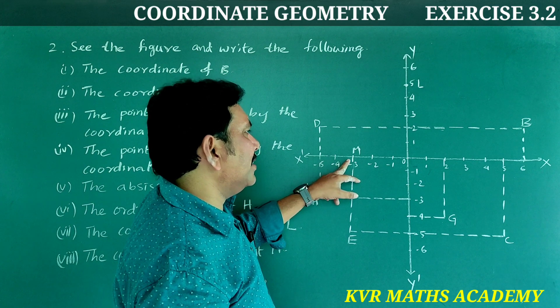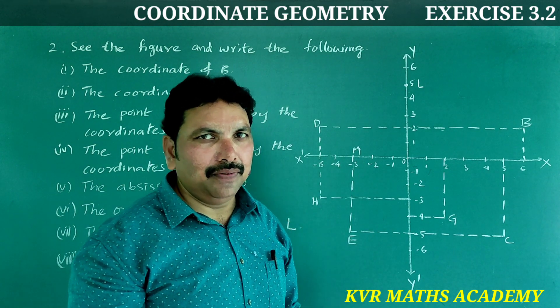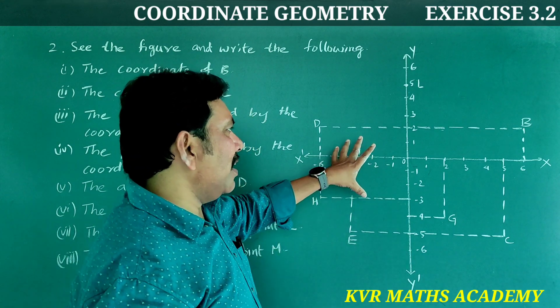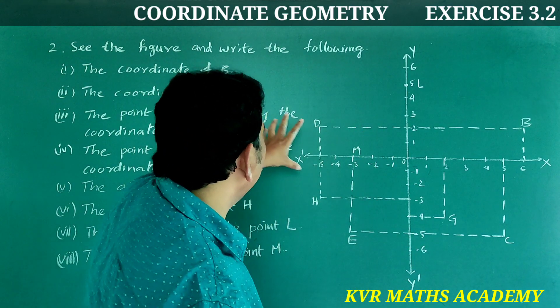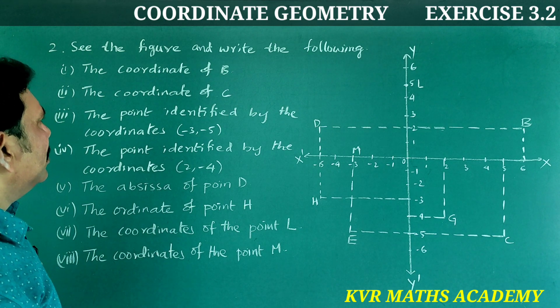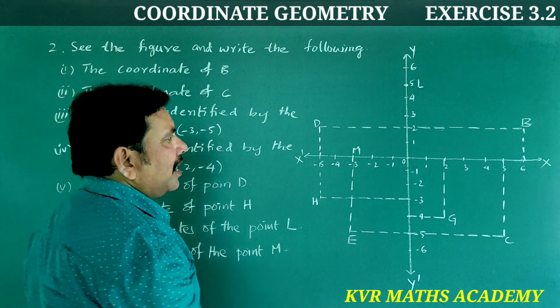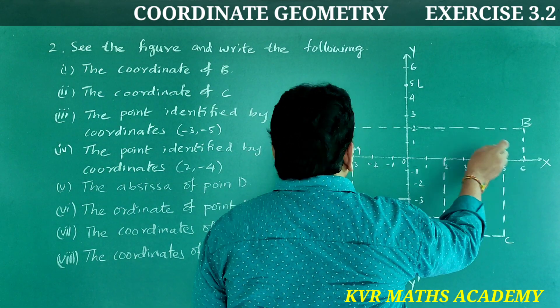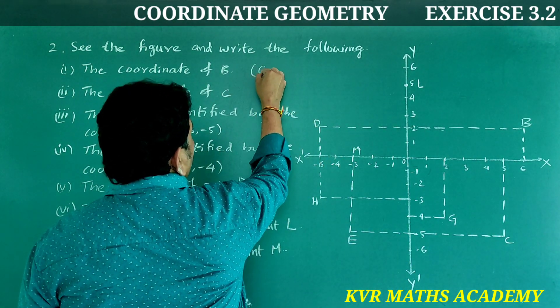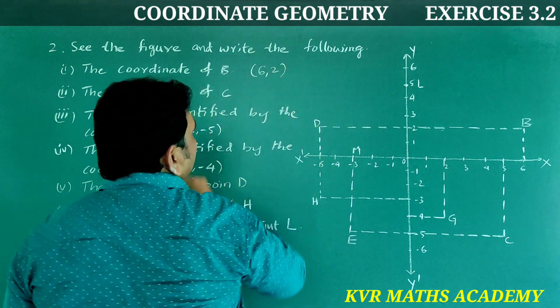Next M is at x-axis -3, y-axis 0. Right? Now let's write the answers for these questions. The coordinates of B: What are the coordinates of B? Yes, x-axis is 6, y-axis is 2, so (6, 2).